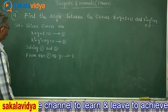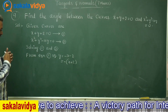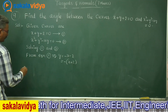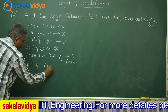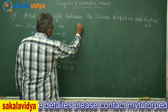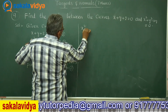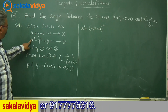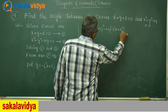Now substitute y is equal to minus of x plus 2 in equation 2. That means in equation 2 we have to replace y. We get x square plus minus of x plus 2, whole square, minus 10 times minus of x plus 2 equal to 0.